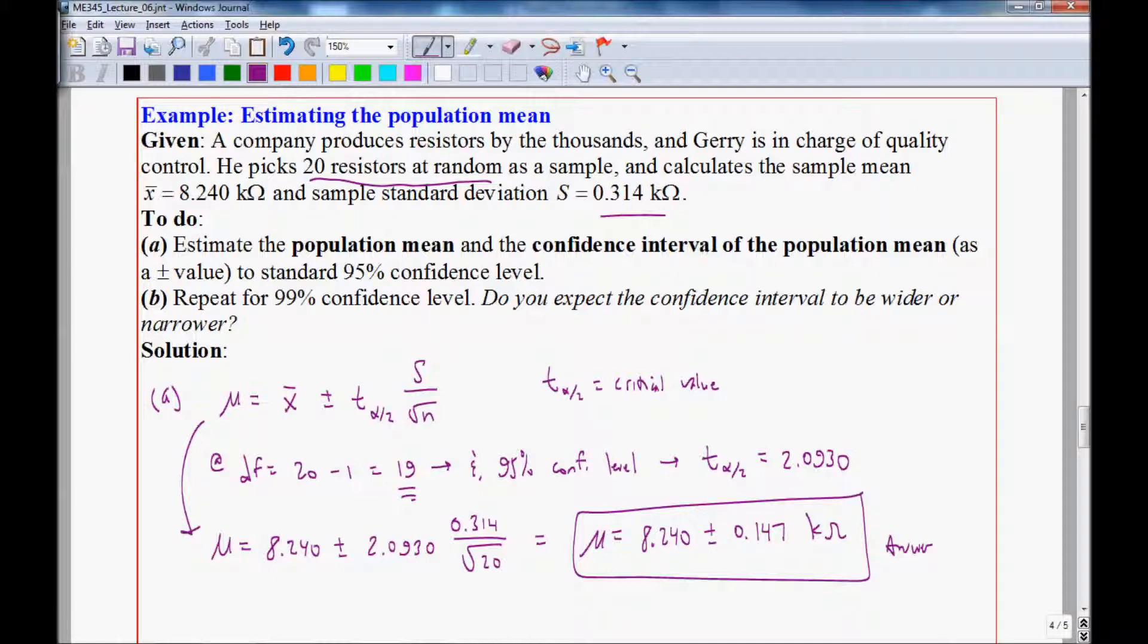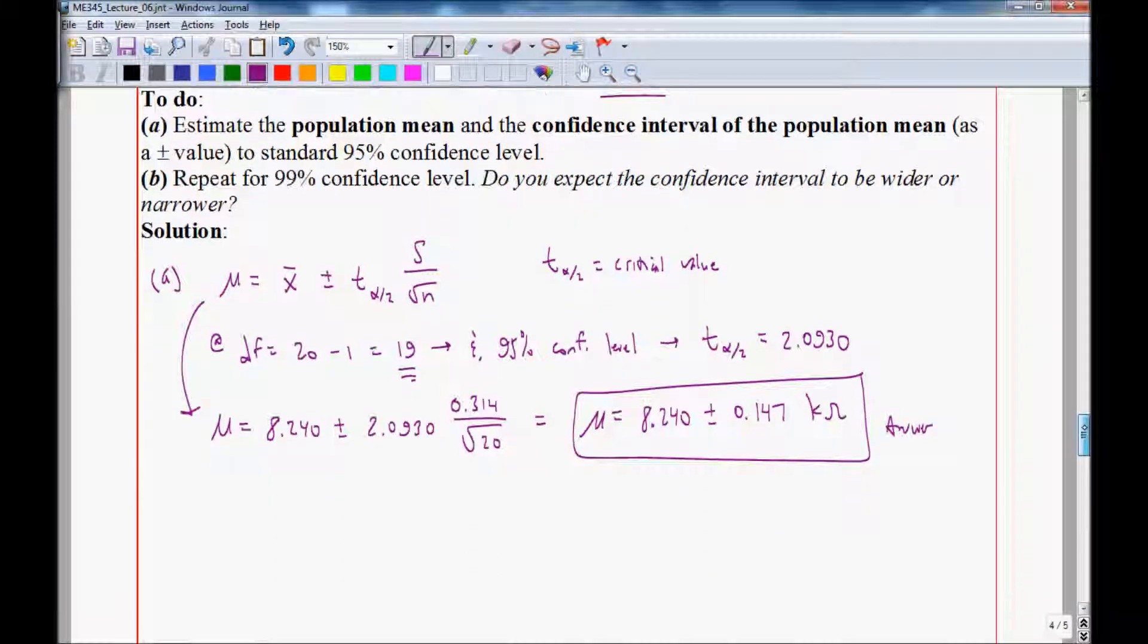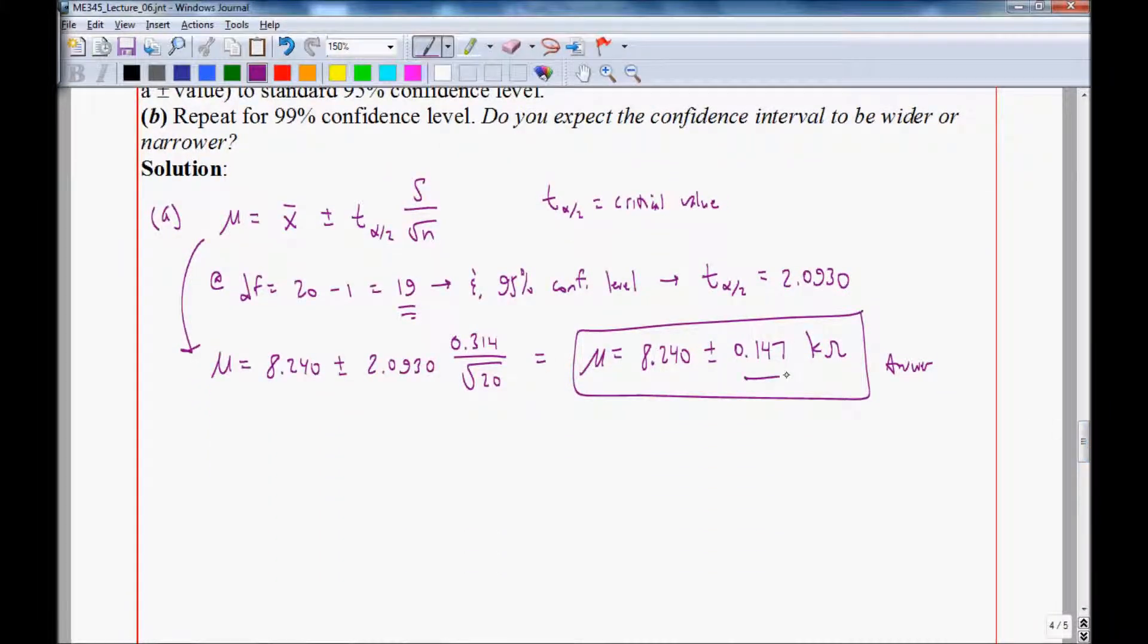if you want to have 100% confidence level, the only way to do that is to have an infinite range, so the confidence interval has to be a lot higher. So I would expect this confidence interval to be higher than the value we chose here when we go to a higher confidence level.